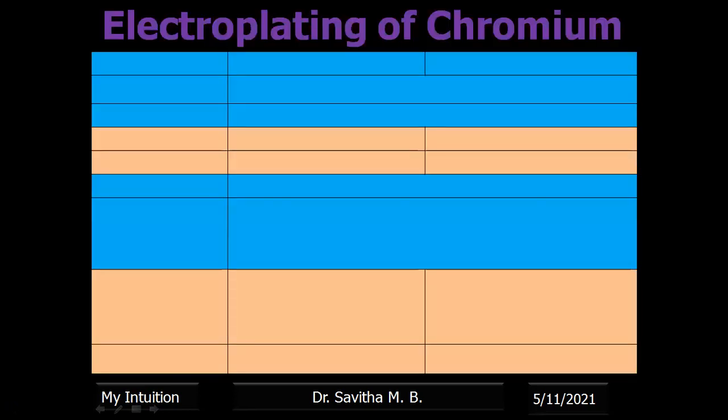Now let us go for an example: electroplating of chromium. When you coat an article with chromium, there are two types of coating — decorative coating and hard coating. These two differ only by the thickness of the chromium coating. If there is a less thickness of chromium coating, it is decorative, and if it is more, it is hard coating.